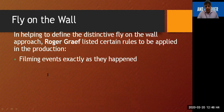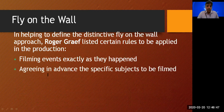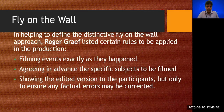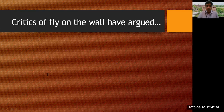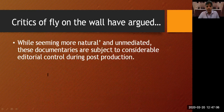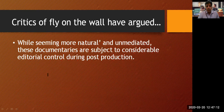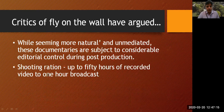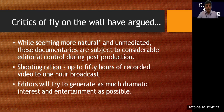Rules of fly on the wall include: you are not supposed to edit or alter events, agreeing in advance on the specific subjects to be filmed, and showing the edited version to participants only to ensure factual errors may be corrected. Critics have argued that while seeming more natural and unmediated, these documentaries are subject to considerable editorial control during post-production — shooting ratios of up to 50 hours of recorded footage to one hour of broadcast means editors generate dramatic interest and entertainment.